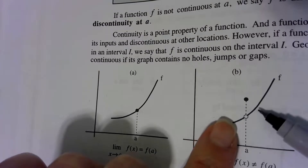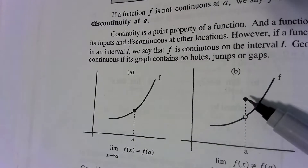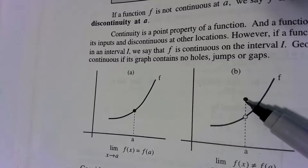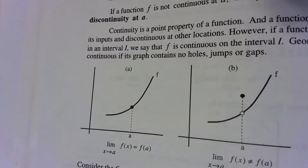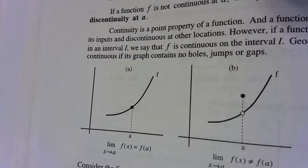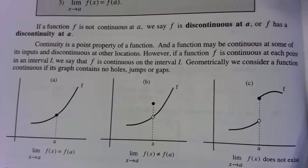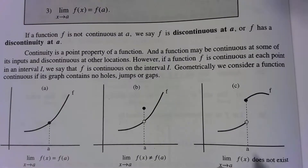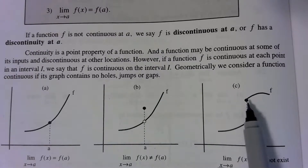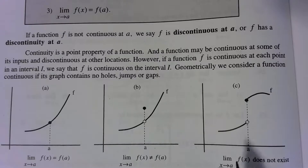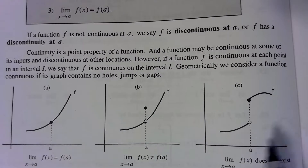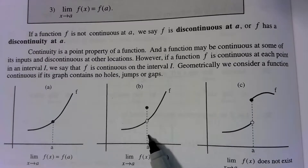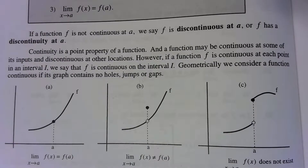In this case, the limit exists from the left and the right — we have a hole there, but it's still approaching the same value. The function is defined at a, but the limit is not equal to the function output value. Maybe the limit is 4 and the function value is 5 — so it's discontinuous. In the third case, we have a break in the graph. The limit from the left doesn't equal the limit from the right, so the limit doesn't exist. Because the limit doesn't exist, we say the function is discontinuous at point a.